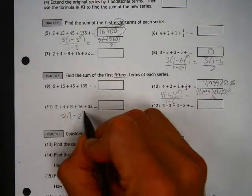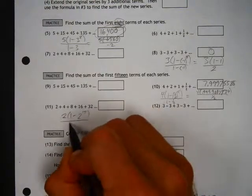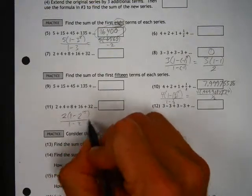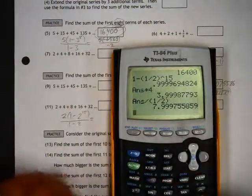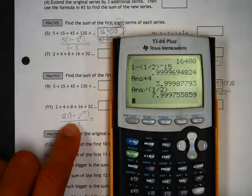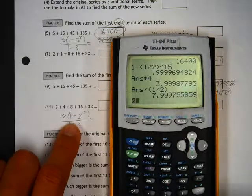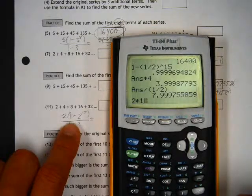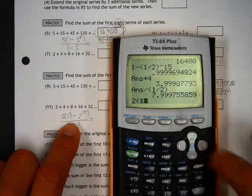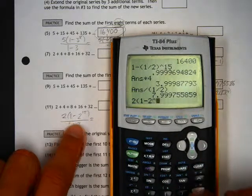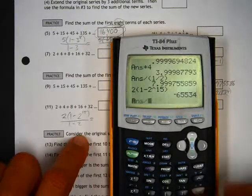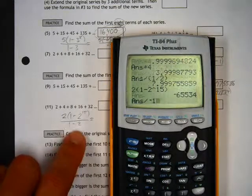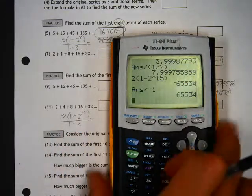1 minus 2 to the 15th power, all over 1 minus 2. So, the 1 minus 2 to the 15th power is going to be as big as the last one was small. 2 times 1 minus 2 raised to the 15th power. And if I divide that by negative 1, which is 1 minus 2, that gives me 65,534.